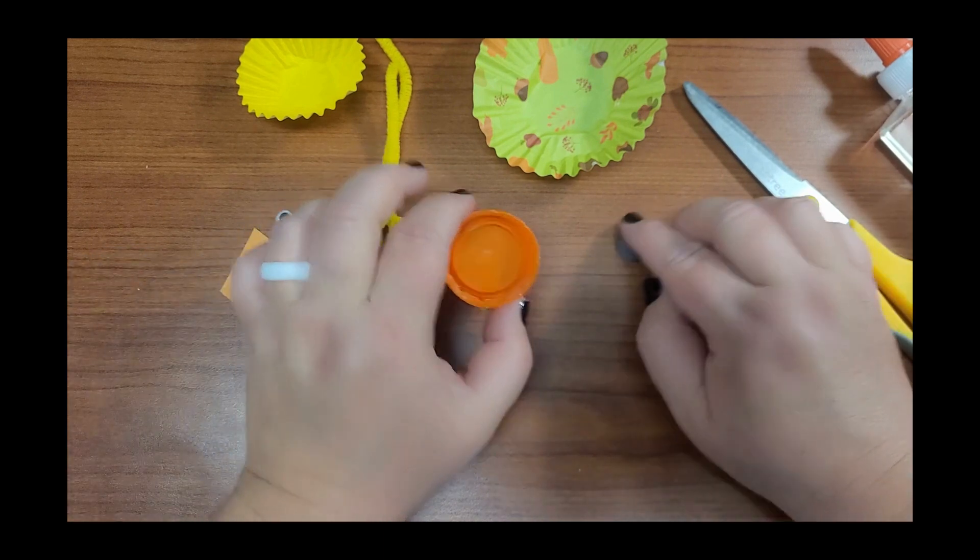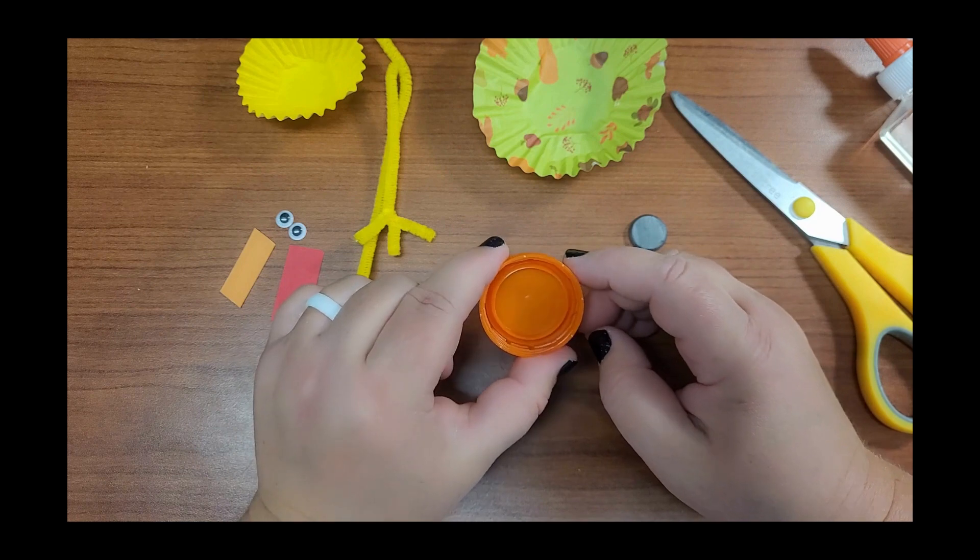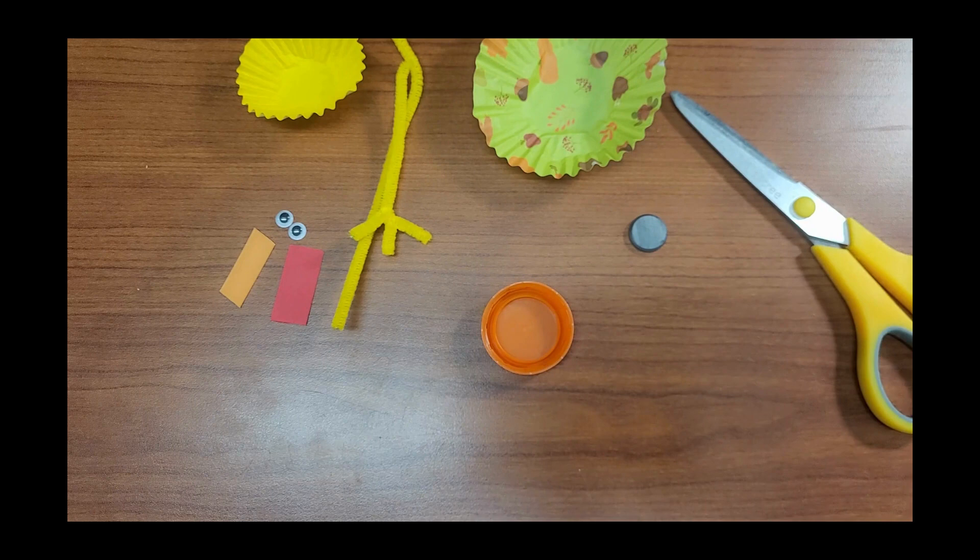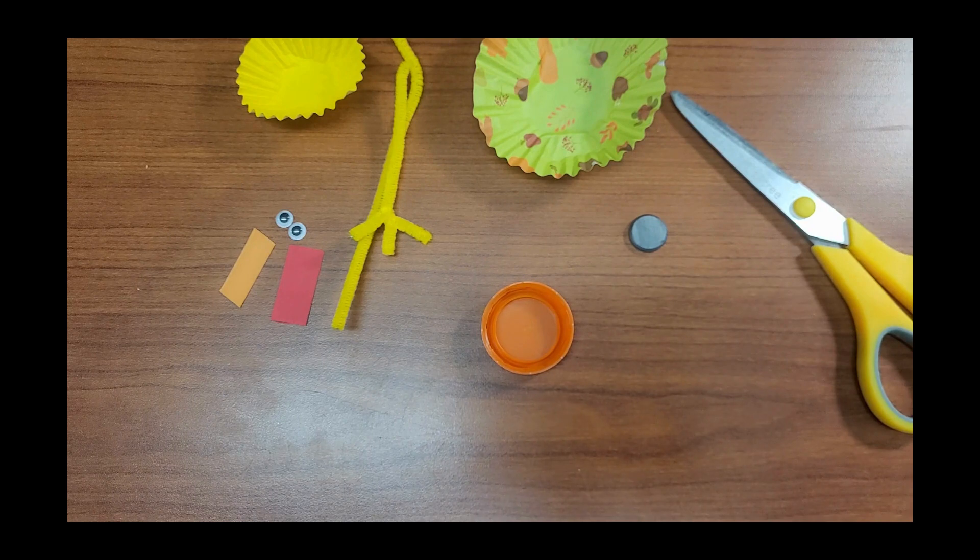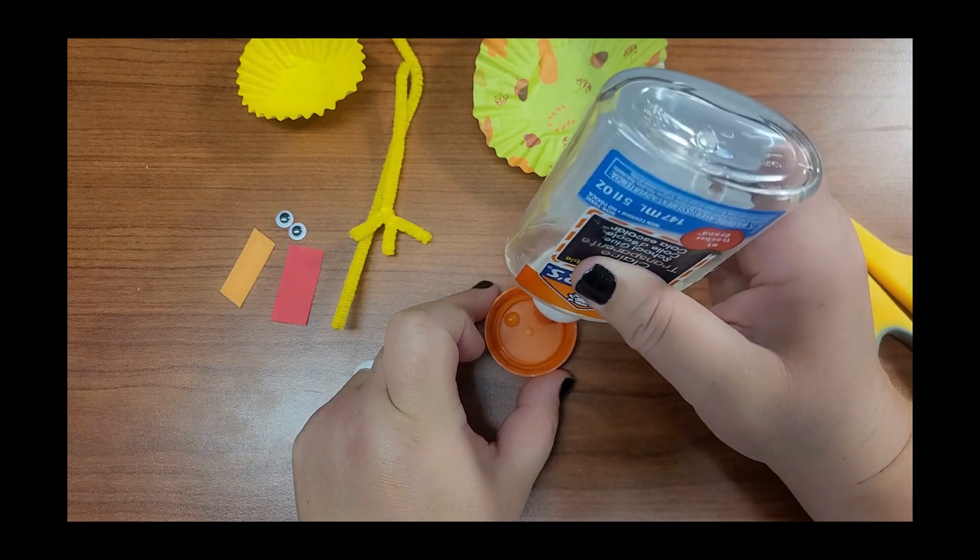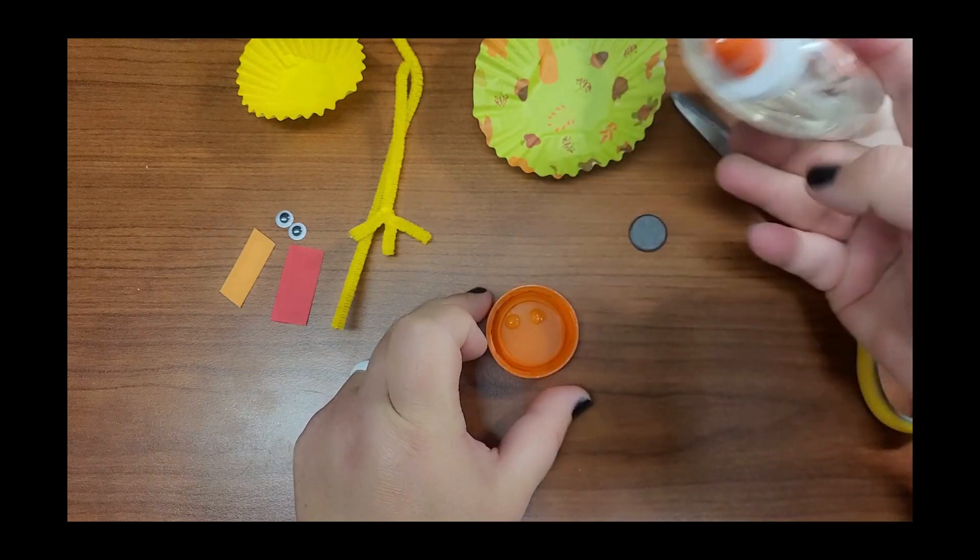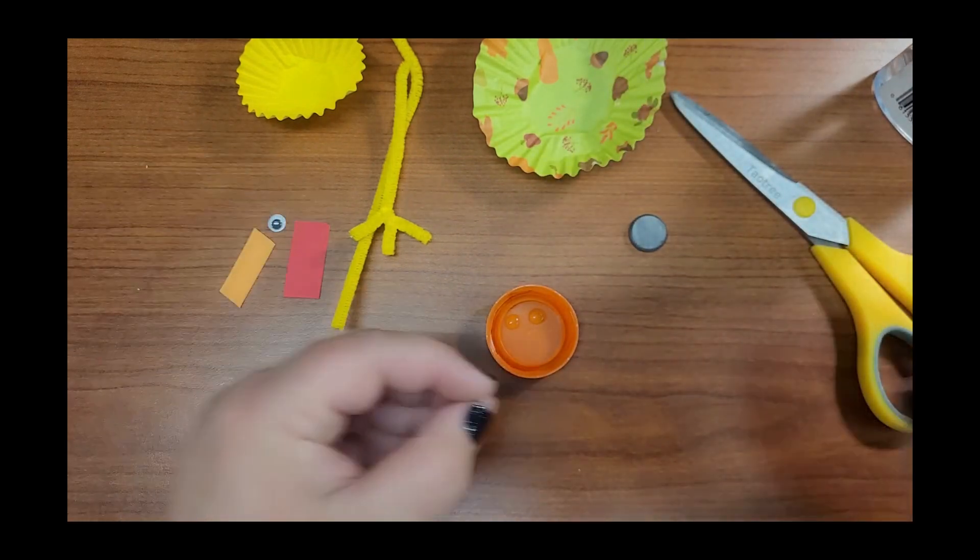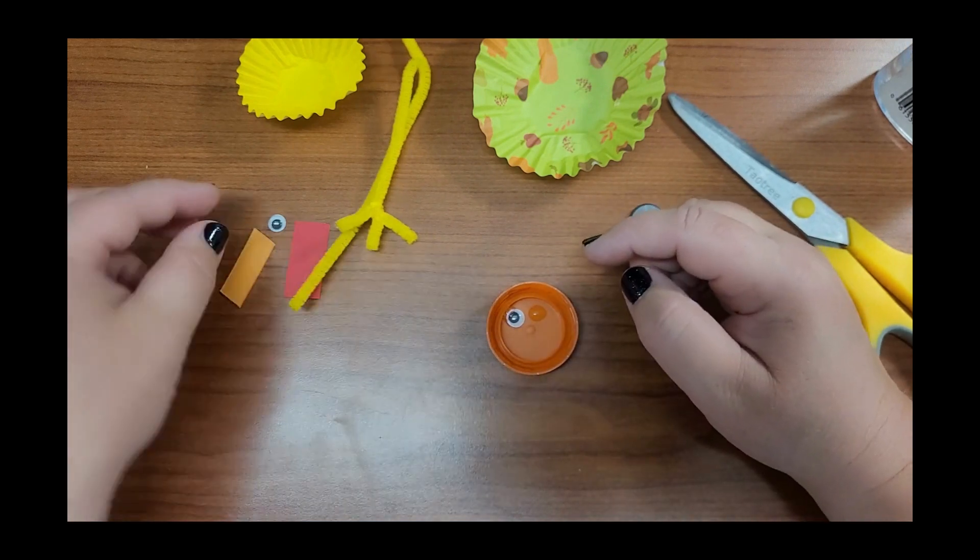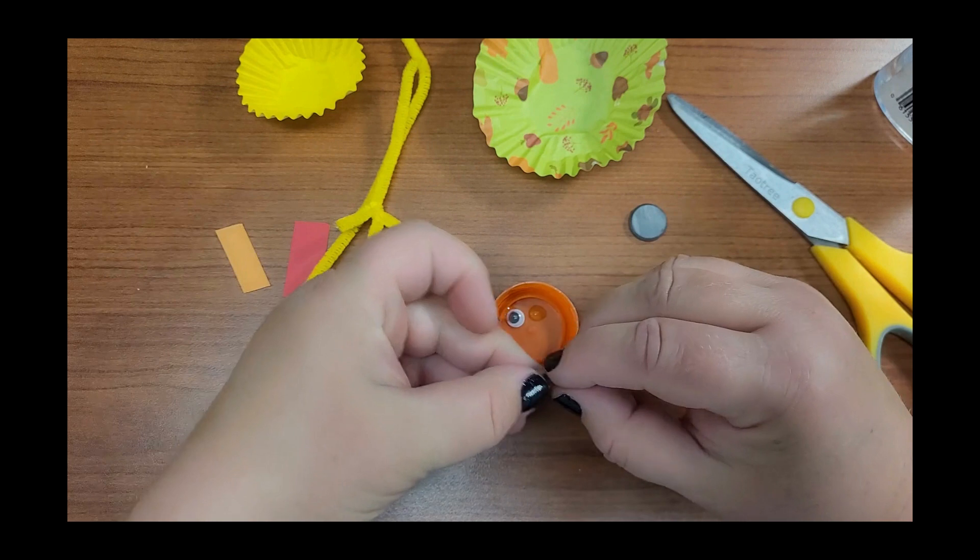So what we're going to do first is we're going to make our turkey's face inside the Gatorade lid. You want to do the underside of the lid to make the face. First we can glue our eyes. You will need glue and scissors from home, and you'll put two dots of glue inside your Gatorade lid and your two googly eyes.